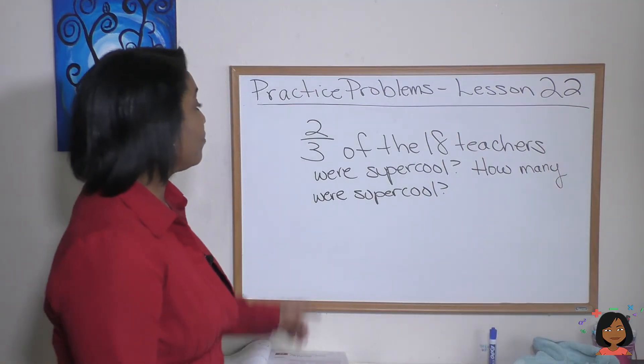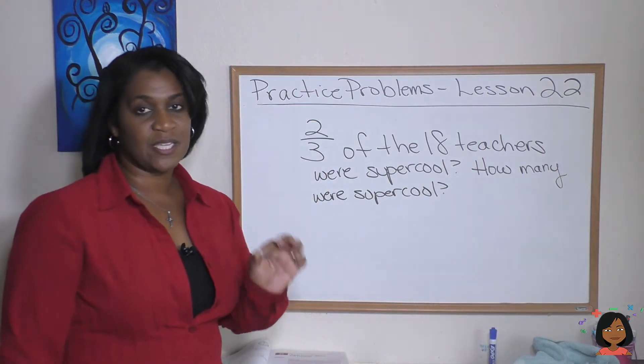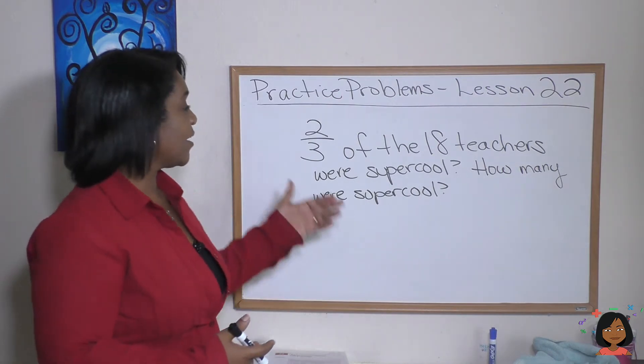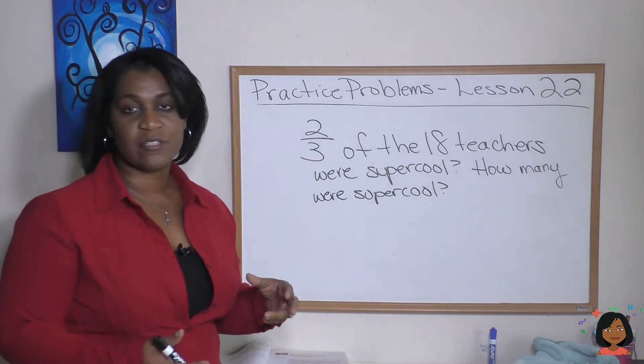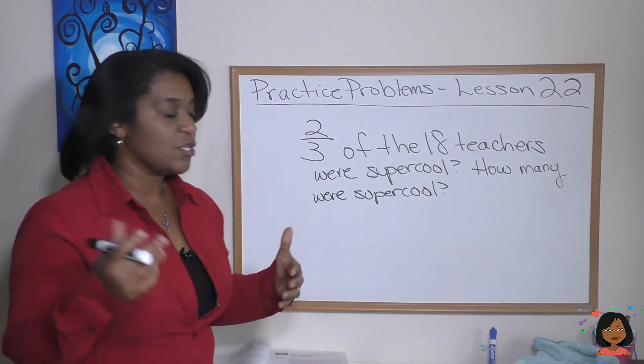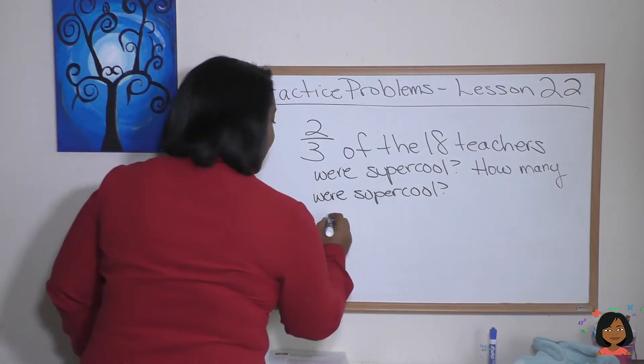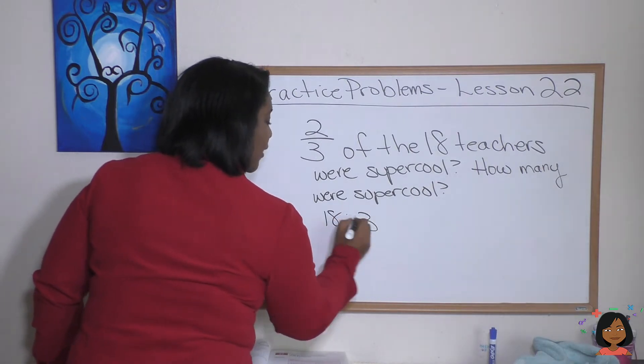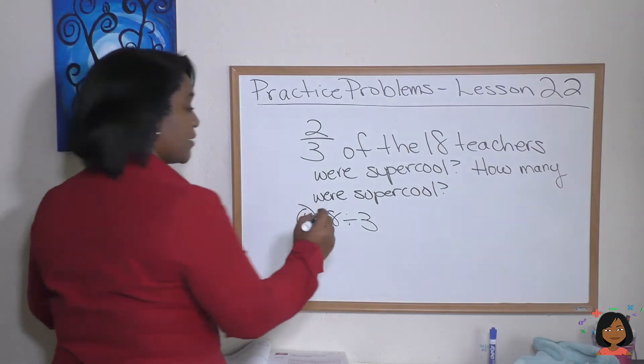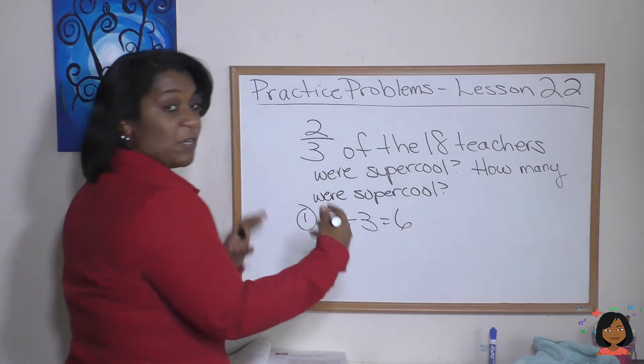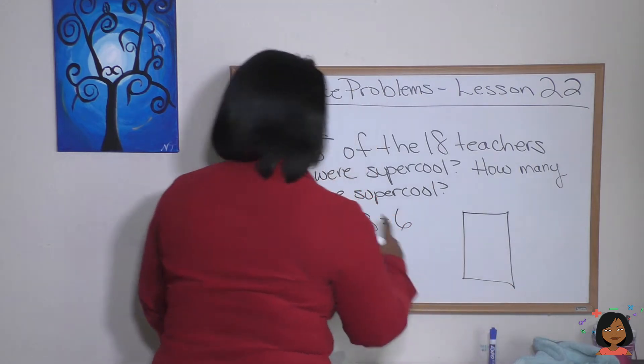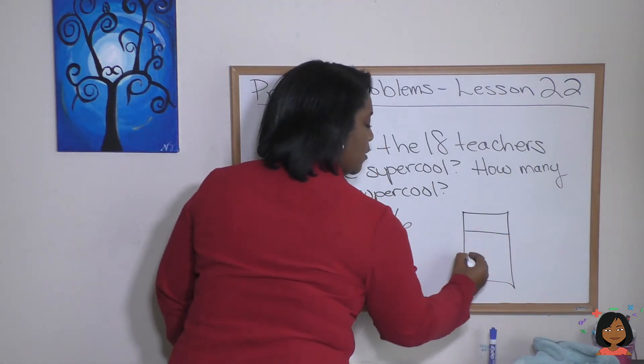Okay, let's take a look. Two thirds of the 18 teachers. Remember, two part problem. Step one, we've got to divide our 18 teachers into three groups. So let's do that: 18 divided by 3. That's my step one. That gives me 6.